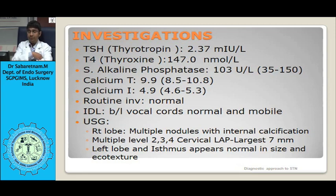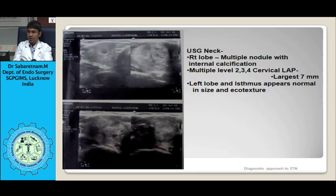The symptoms were suggestive of hypothyroidism, but the TSH and T4 levels were normal. Calcium was normal. Investigation by ultrasound showed multiple nodules in both the right lobe as well as the cervical lymph nodes. I will tell you when to suspect malignancy and what to do, and what not to do.